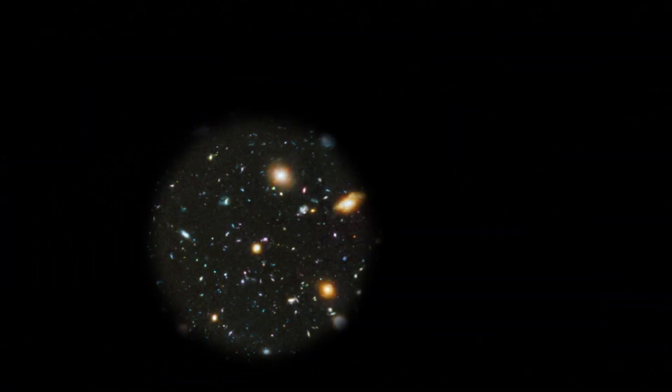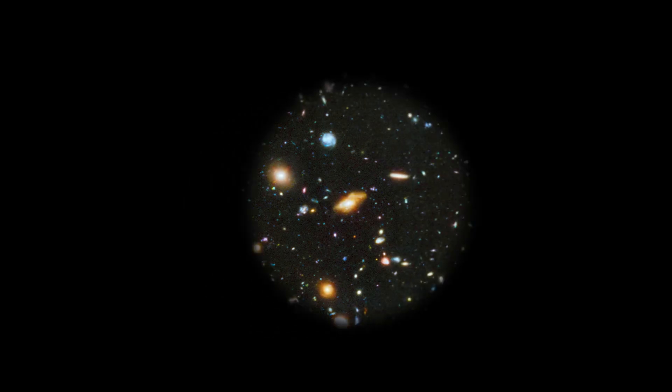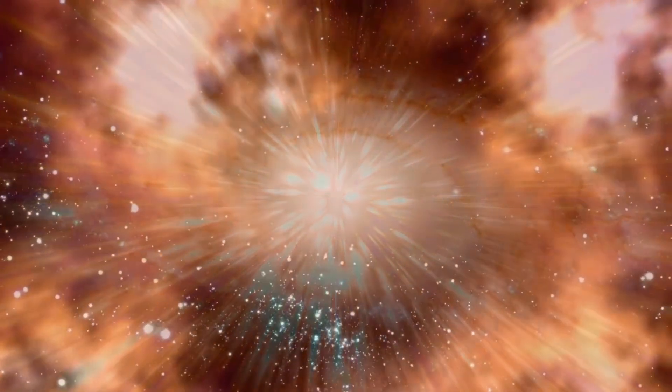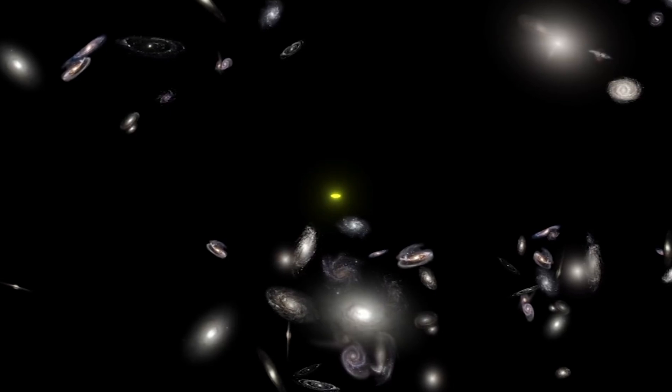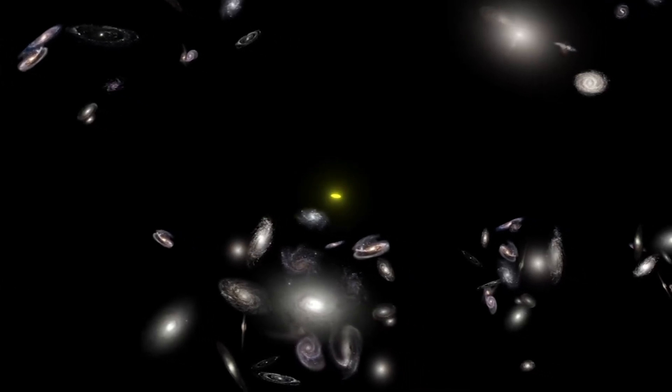The striking images captured by the James Webb Telescope have challenged our understanding of the origins of the universe. Specifically, these images directly contradict the Big Bang Hypothesis, which has long been considered an unquestioned truth by most cosmology theorists. The galaxies captured in these images appear to be too small, smooth, and old.